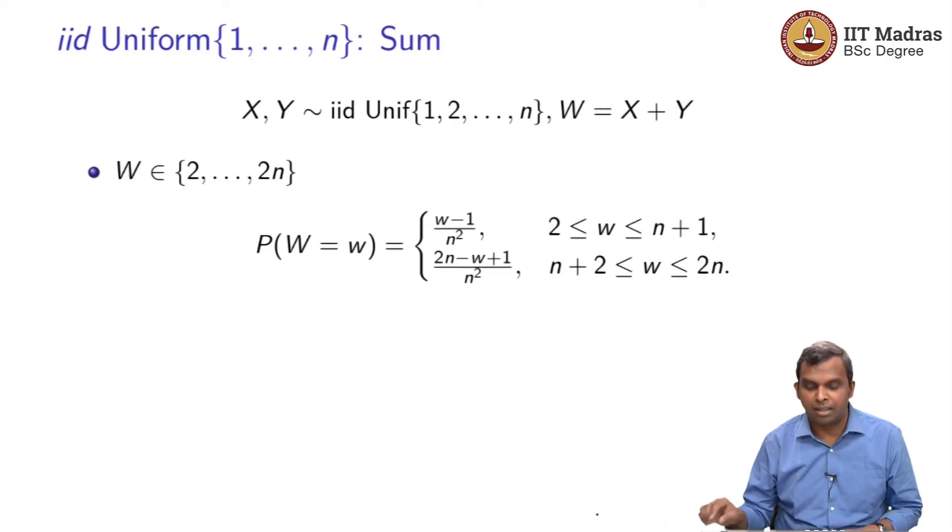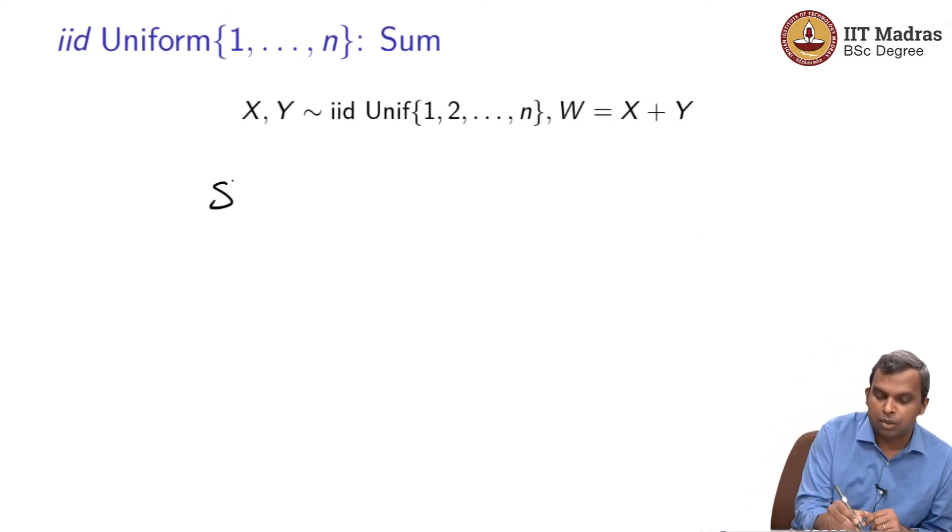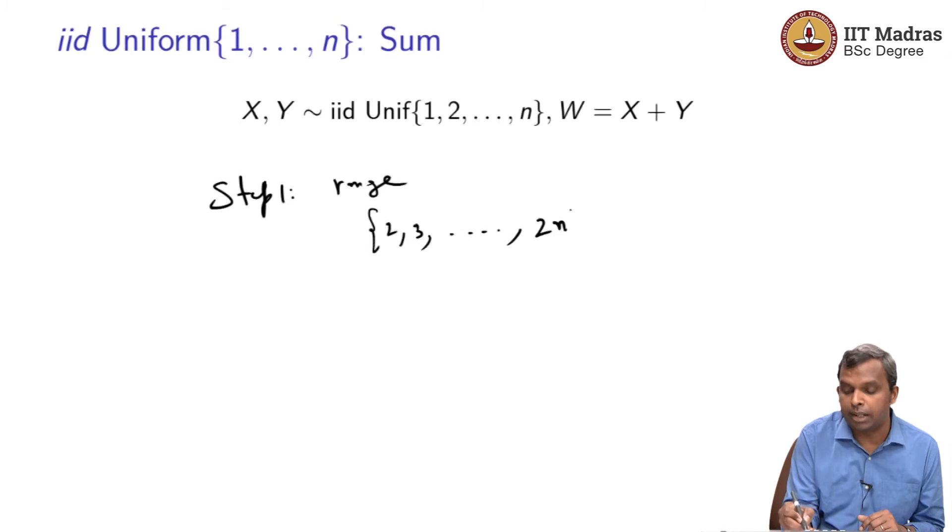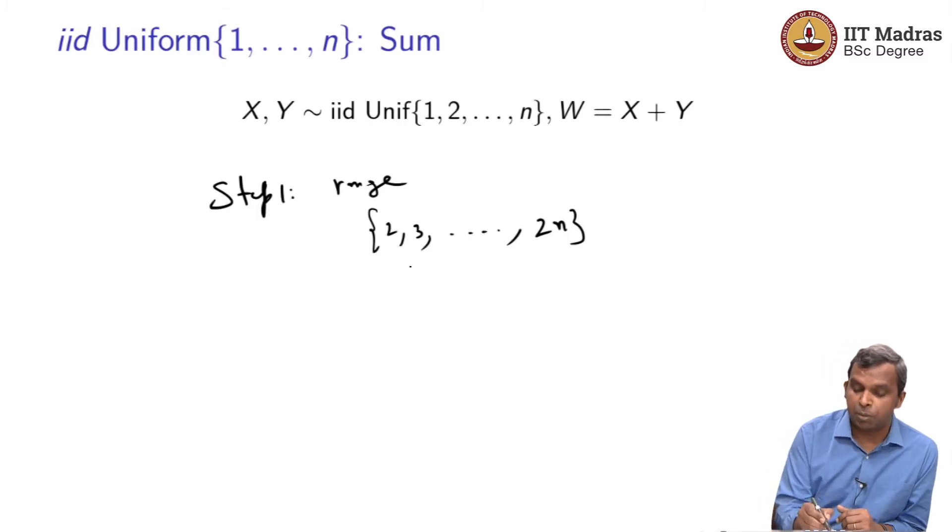Now how do you do it? The first step once again is the range. Step 1 is the range. Range is going to be 2, 3, so on till 2n. That's easy to see. It starts with 2, goes all the way to 2n.